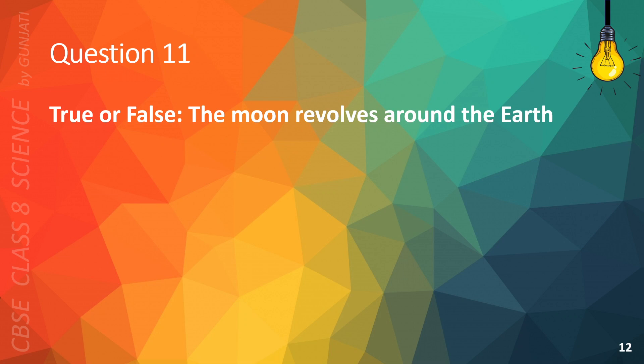Question 11. True or false? The Moon revolves around the Earth. The correct answer is A. True.